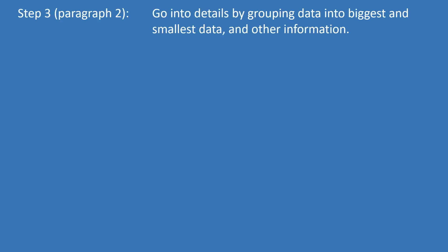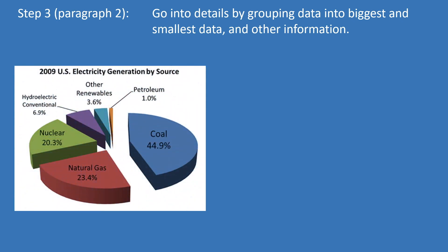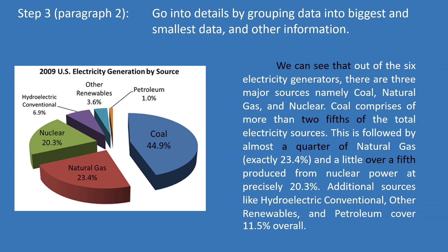Step three: go into details. Scrutinize the data. Try to look for patterns and classify them from largest to smallest or most to least. For this chart, we may say: "We can see that out of the six electricity generators, there are three major sources: namely coal, natural gas, and nuclear. Coal comprises more than two-fifths of the total electricity sources. This is followed by almost a quarter from natural gas and a little over a fifth produced from nuclear power at precisely 20.3%. Additional sources like hydroelectric conventional, other renewables, and petroleum cover 11.5% overall."